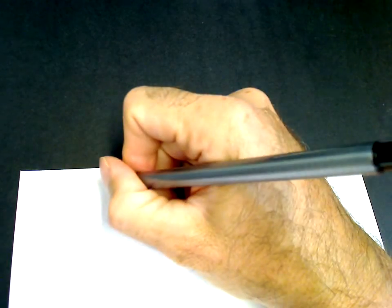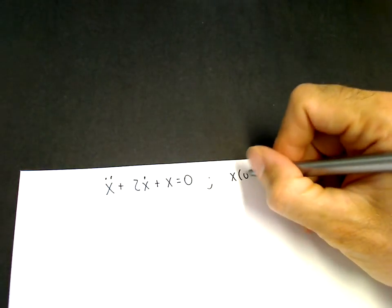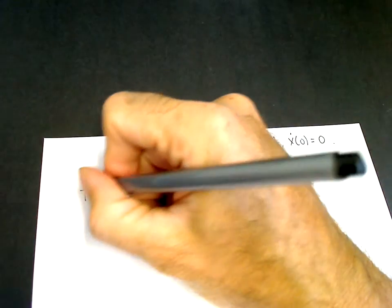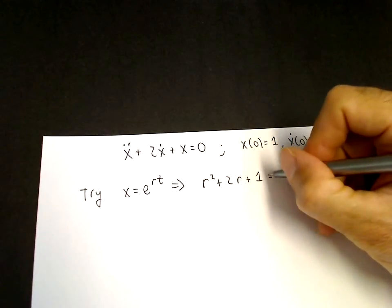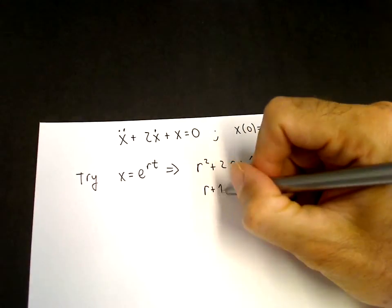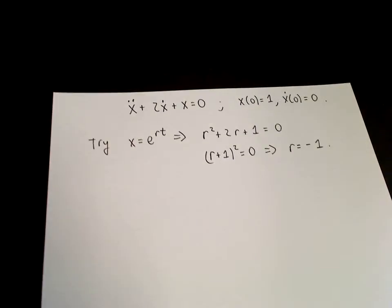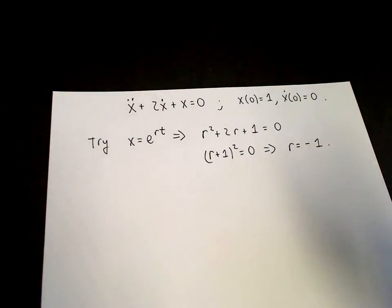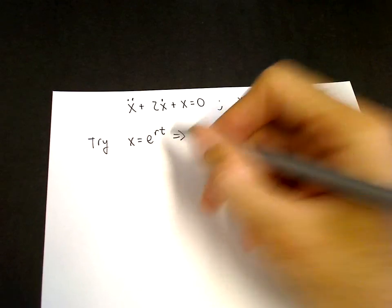Let's try a simple example: solve x-double-dot plus 2x-dot plus x equals 0, with x of 0 equals 1 and x-dot of 0 equals 0. We try x equals e to the rt, giving r squared plus 2r plus 1 equals 0. This factors as (r plus 1) squared equals 0 — a repeated root, r equals minus 1. So our first solution is e to the minus t, and our second solution is t times e to the minus t.